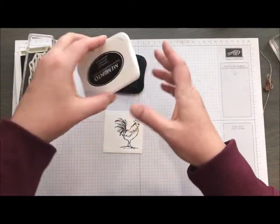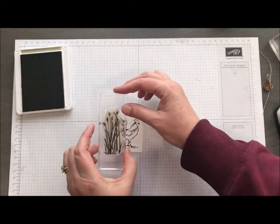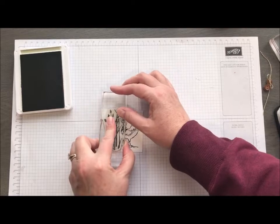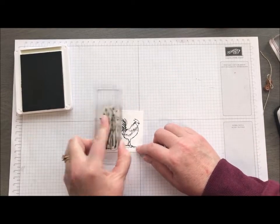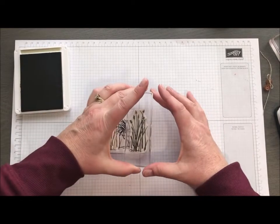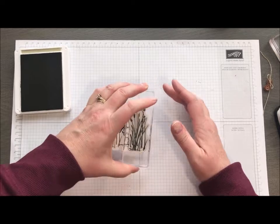Then I'm going to use our Crumb Cake ink to stamp the weedy parts that he's kind of walking through the weeds, probably looking for some bugs. I know that's what the roosters and chickens do on our farm is they go through the weeds looking for bugs.